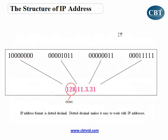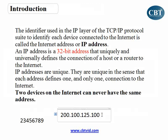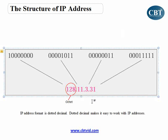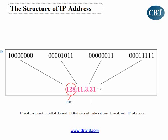Let's look at the structure of the IP address. Here is another example: 128.11.3.31. You see, I have a three-digit number here, then 11, then 3, and 31. This is how we write IP addresses — we separate every group of digits with one dot.